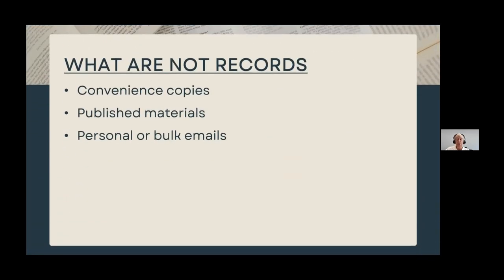The first thing you need to do is determine whether the document in question is a record at all. You do not need to formally destroy documents that are not records in the first place. Records that you do not generate in the office, copies made for convenience, and correspondence not dealing with official business are not records. For example, older versions of the Mississippi Code stored in courthouses aren't actually their records. A document is a record if it has content that relates to official business and your office has either created or received it.